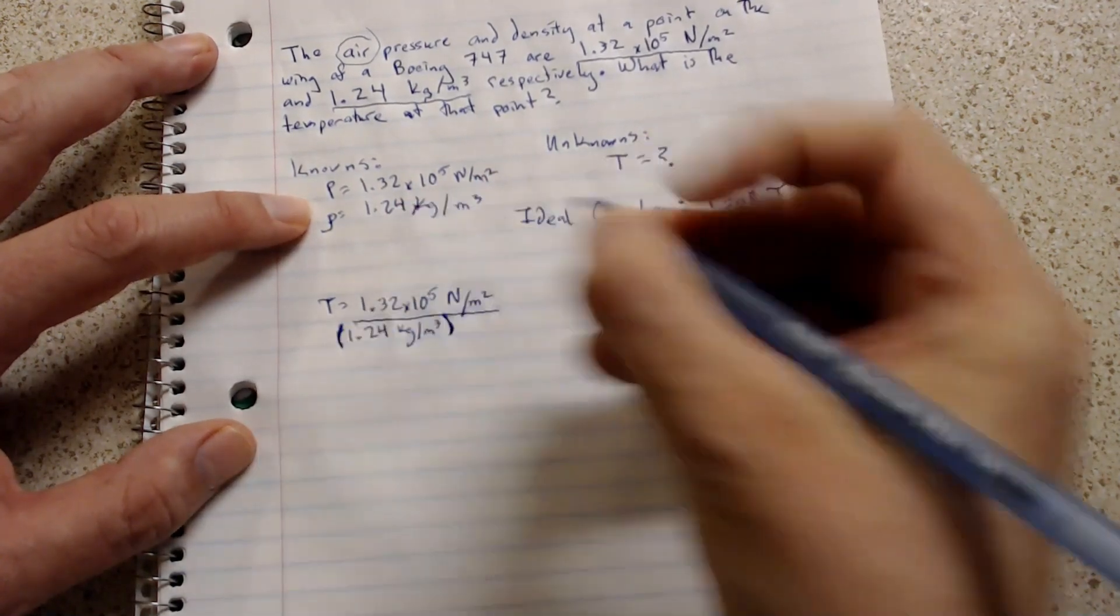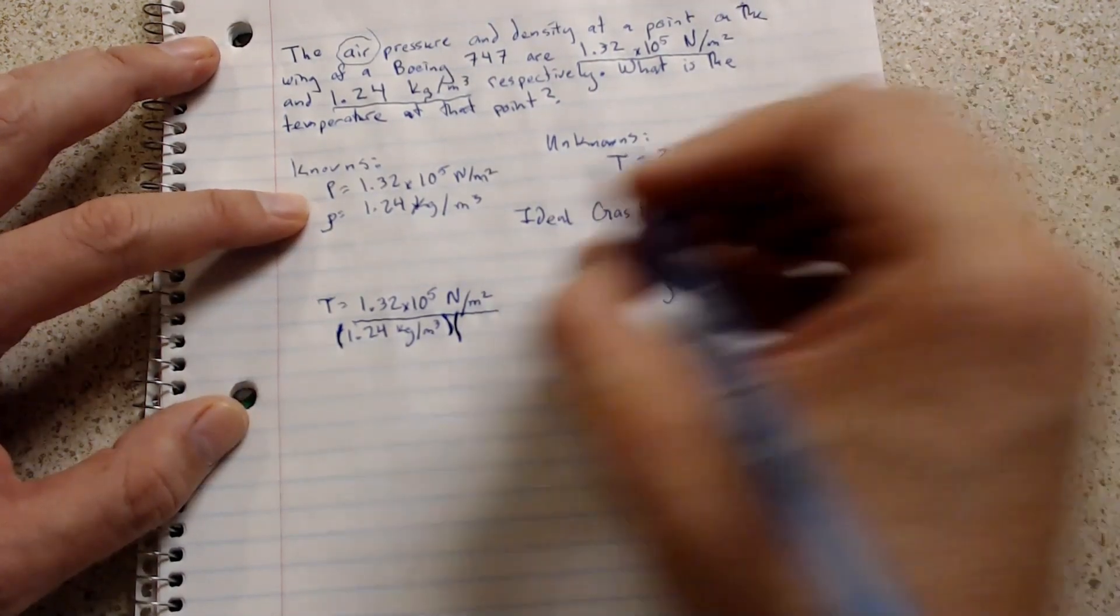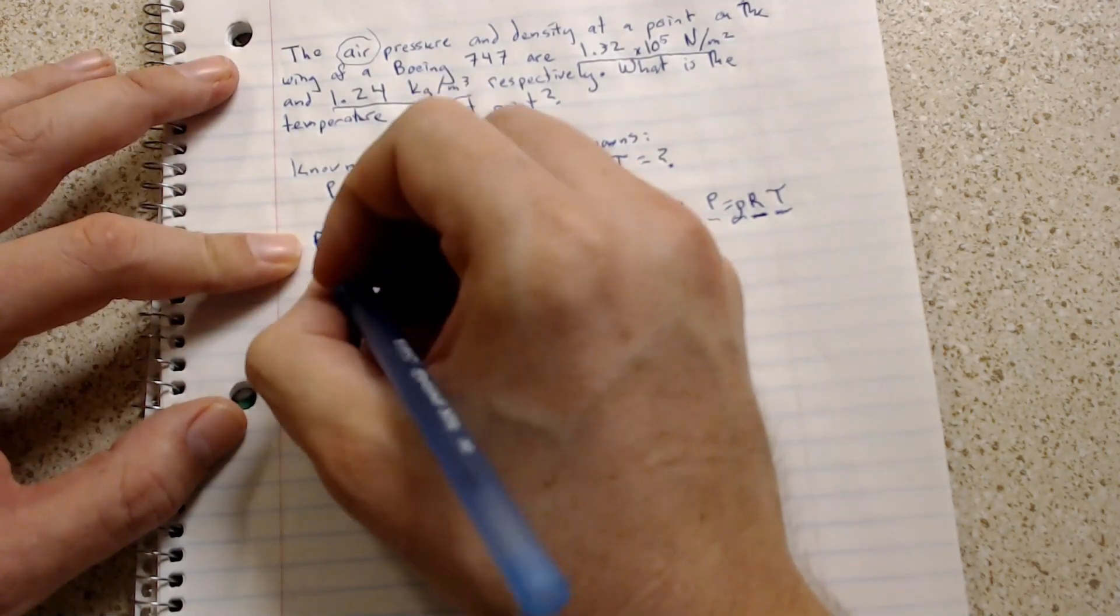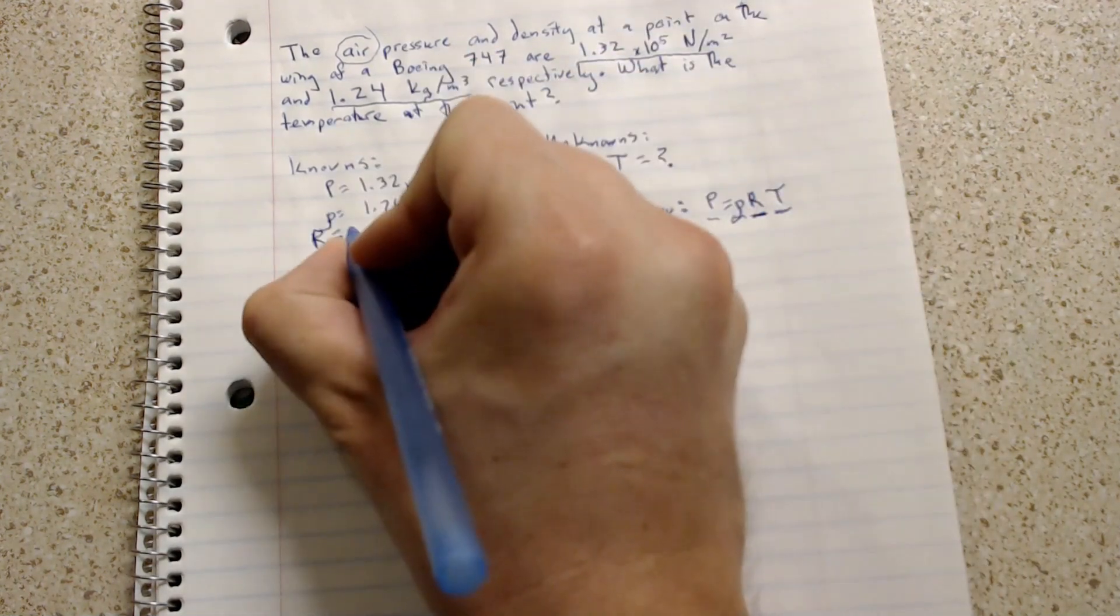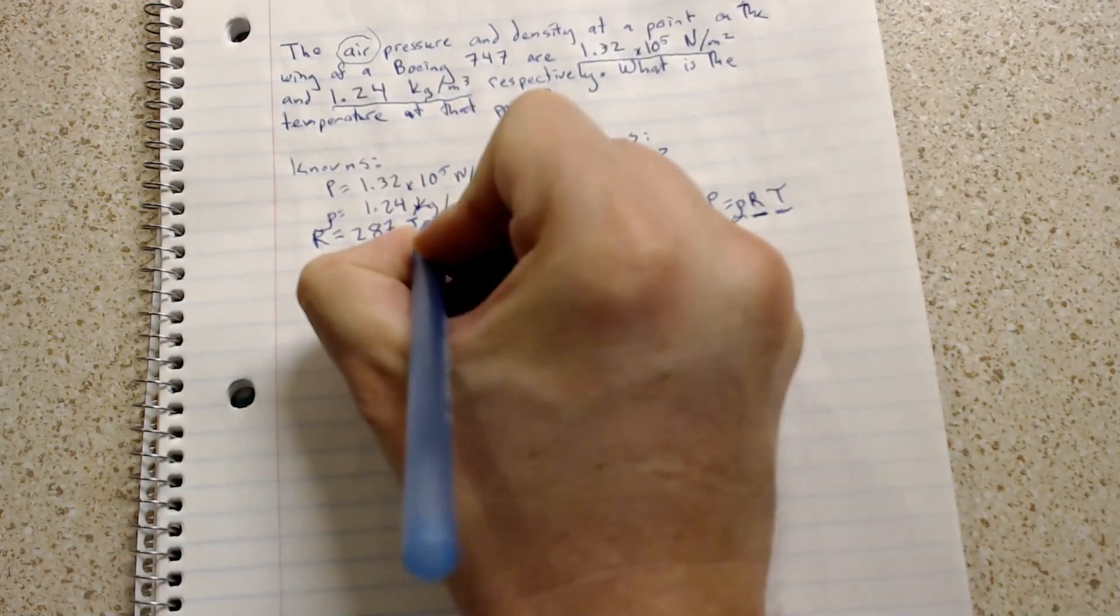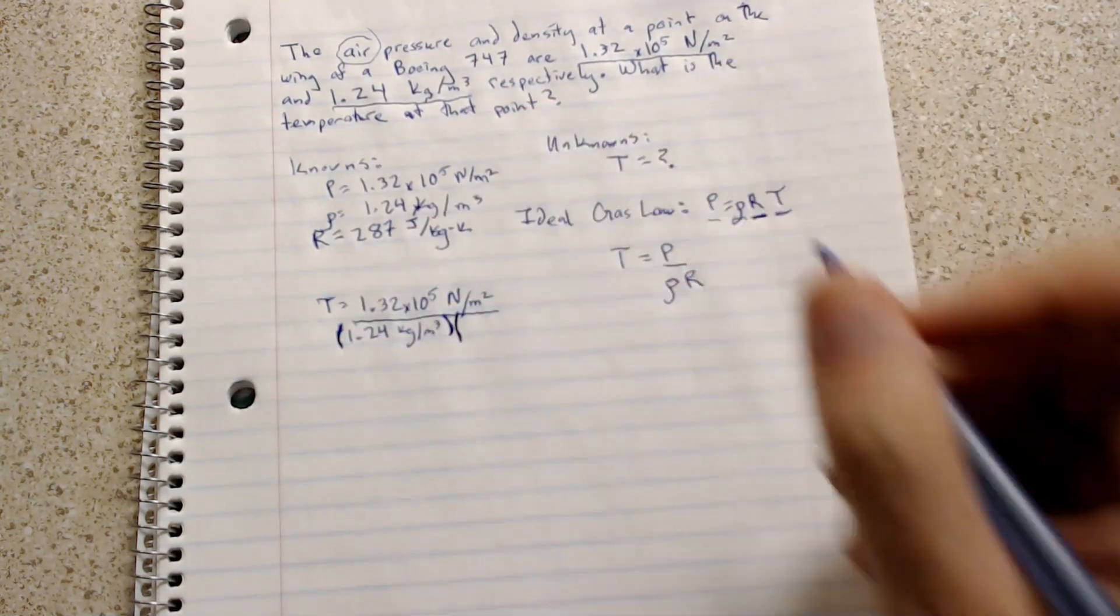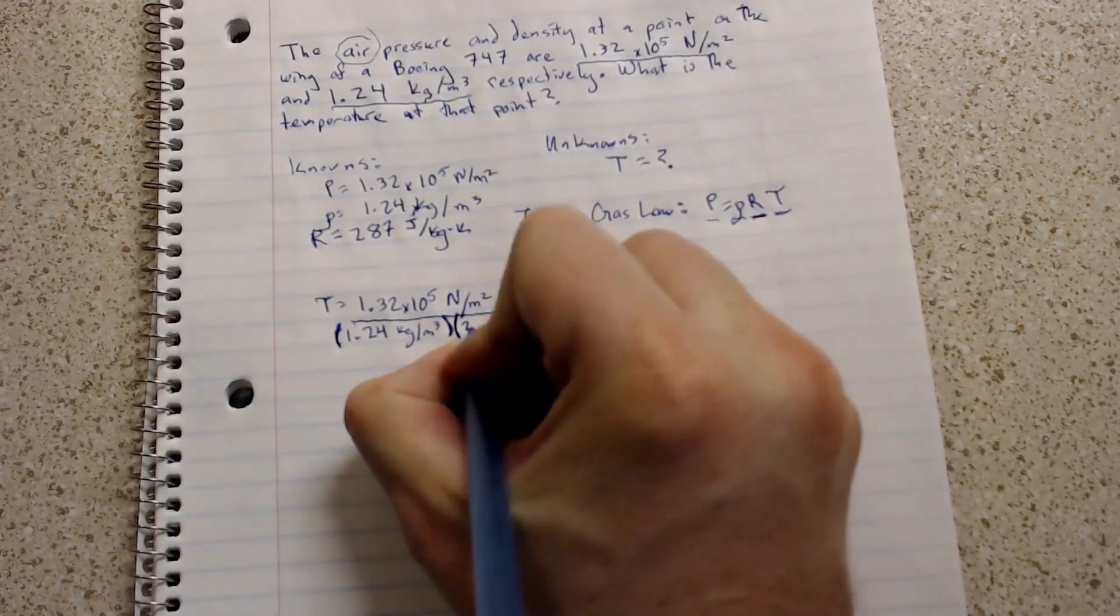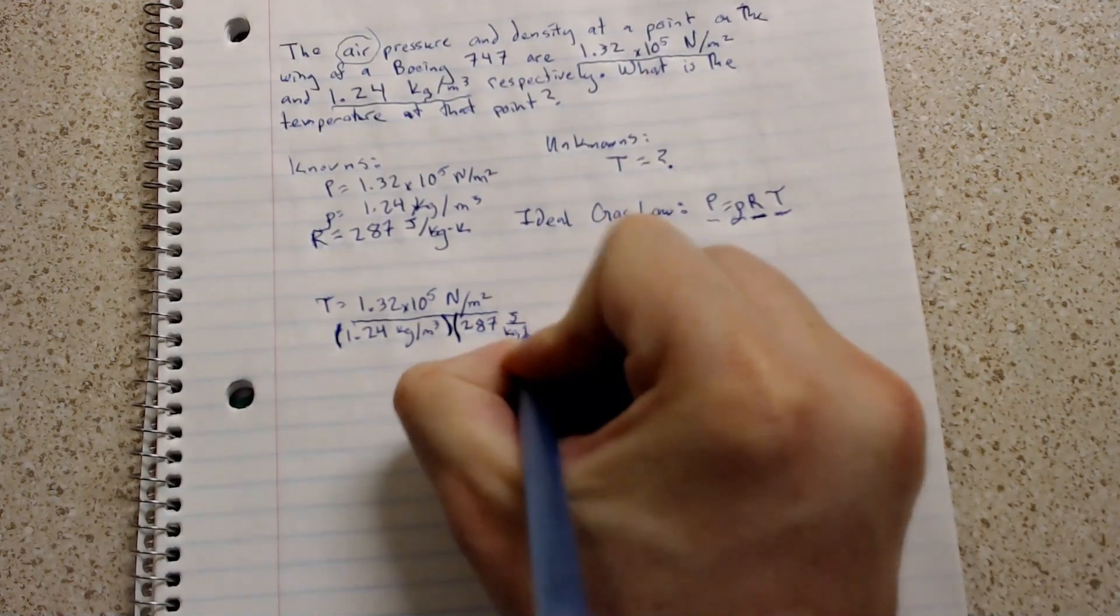These are parentheses times the gas constant which I'll throw up here for your reference. The gas constant for air. The gas constant for air that we're going to use in this equation is 287 joules per kilogram Kelvin. Let's put that into our equation. 287 joules per kilogram Kelvin.